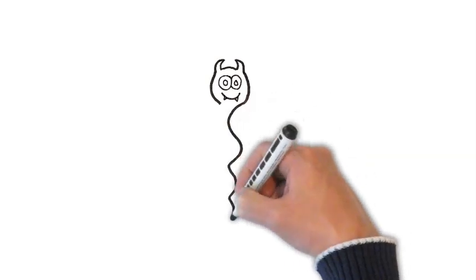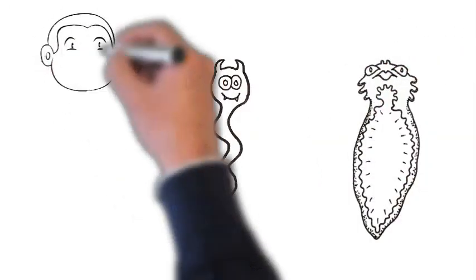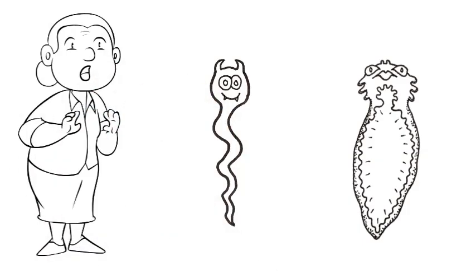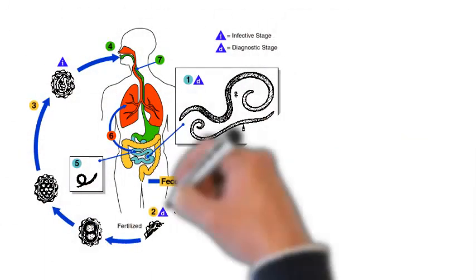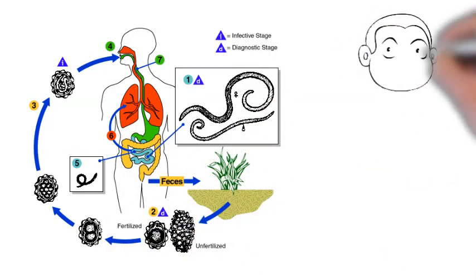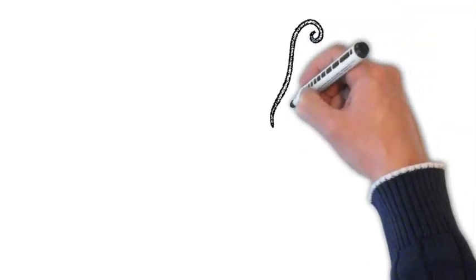Parasitic worms are divided into roundworms and flatworms. Roundworms are round like earthworms, even though they may be as thin as hairs like threadworms, filaria, or microscopically small like trichinella.